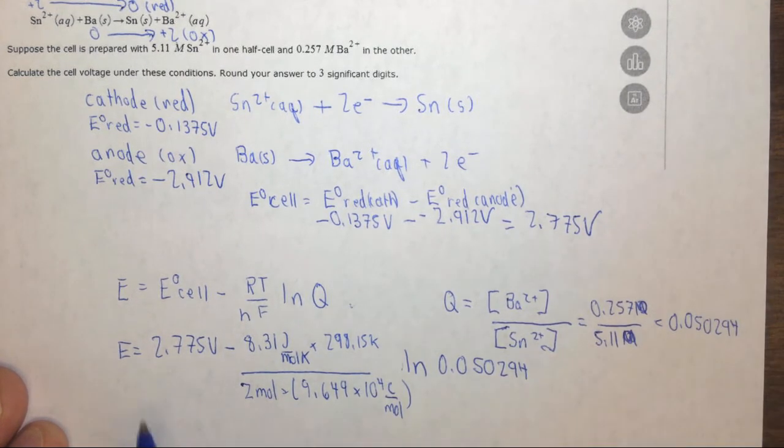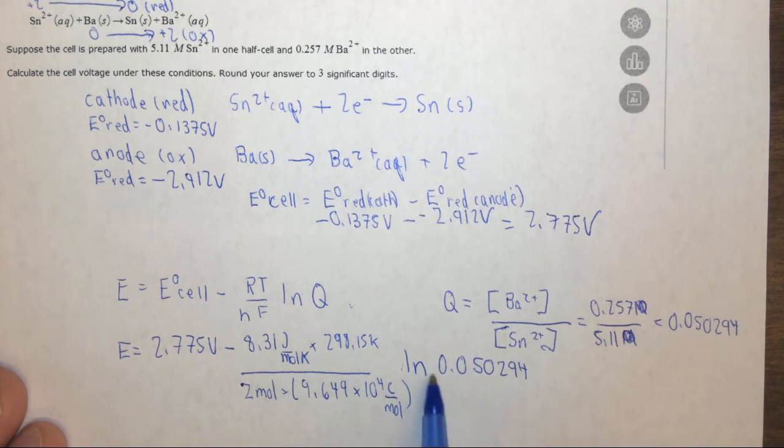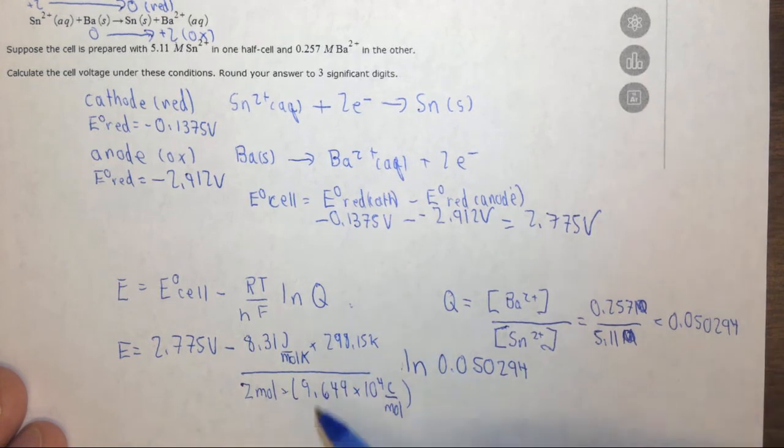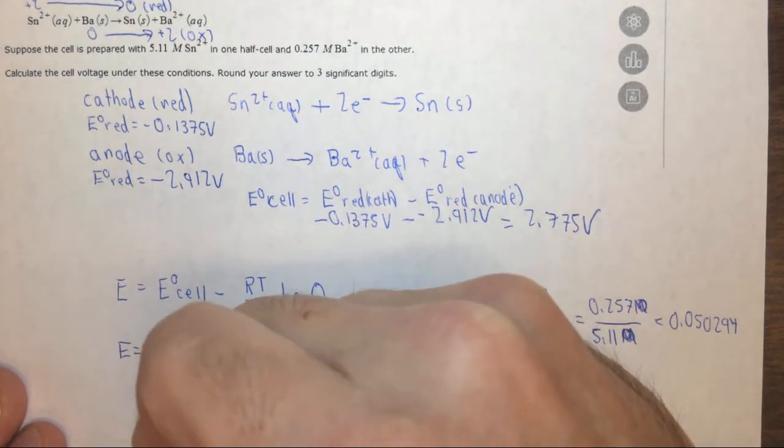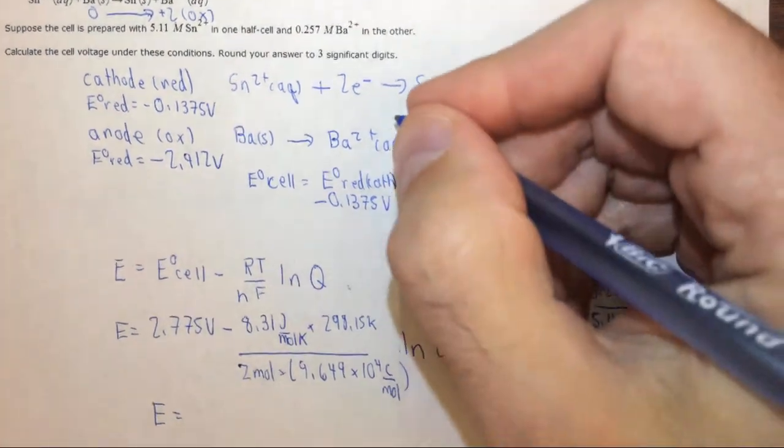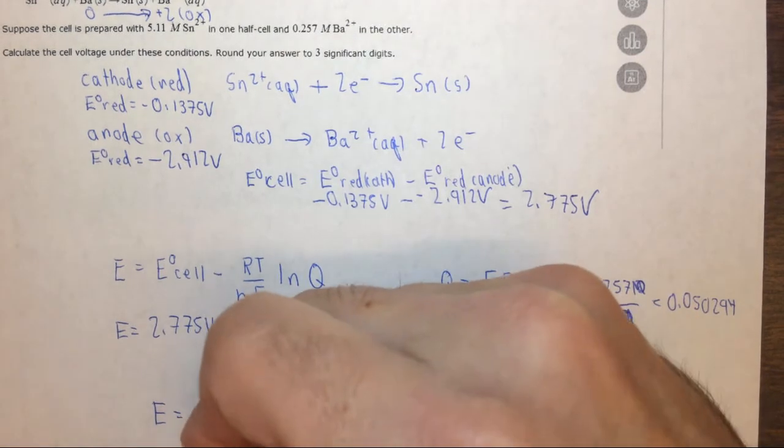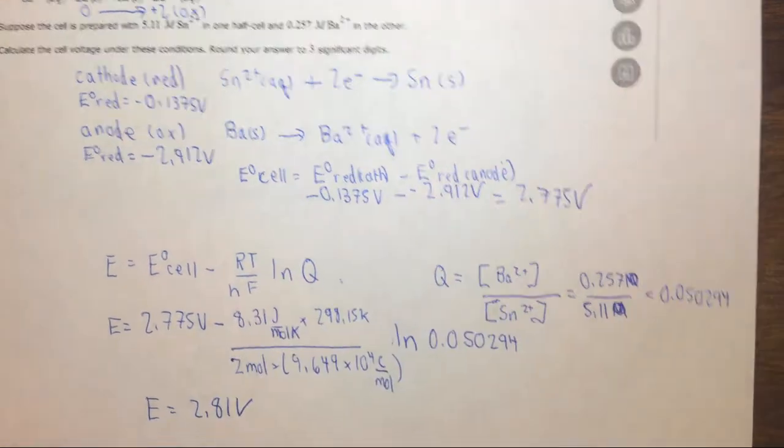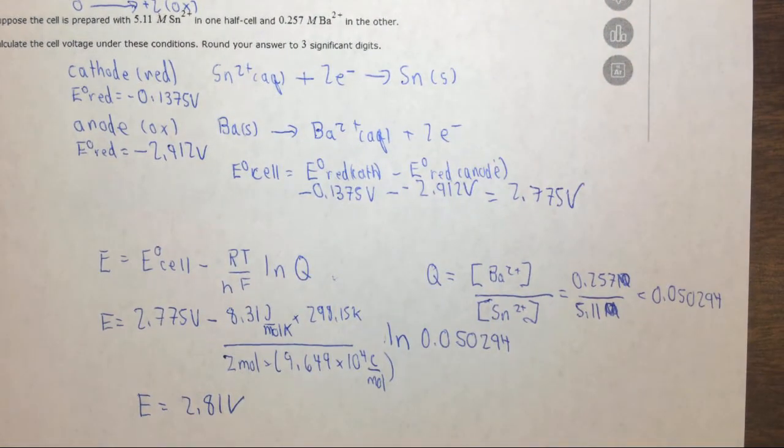So that will give us units of volts because this ln is unitless, so then basically you're going to get overall units of volts. So you're going to have volts minus a negative volts or plus volts, and when you round it to significant figures you get 2.81 volts after you do all of the math. So this is how you want to approach this problem.